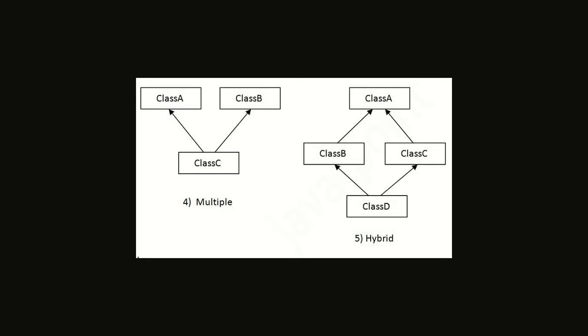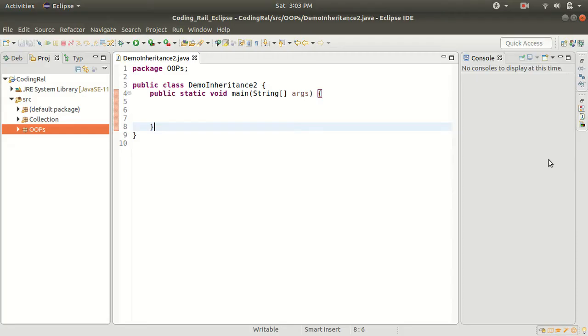So all the methods present inside an interface we will use in class C. The fifth part is hybrid inheritance, which is a combination of hierarchical and multiple inheritance. Here class B and class C both extend class A — that is hierarchical. Then class D extends both class B and class C, so class D has properties and methods of class B, class C, and class A.